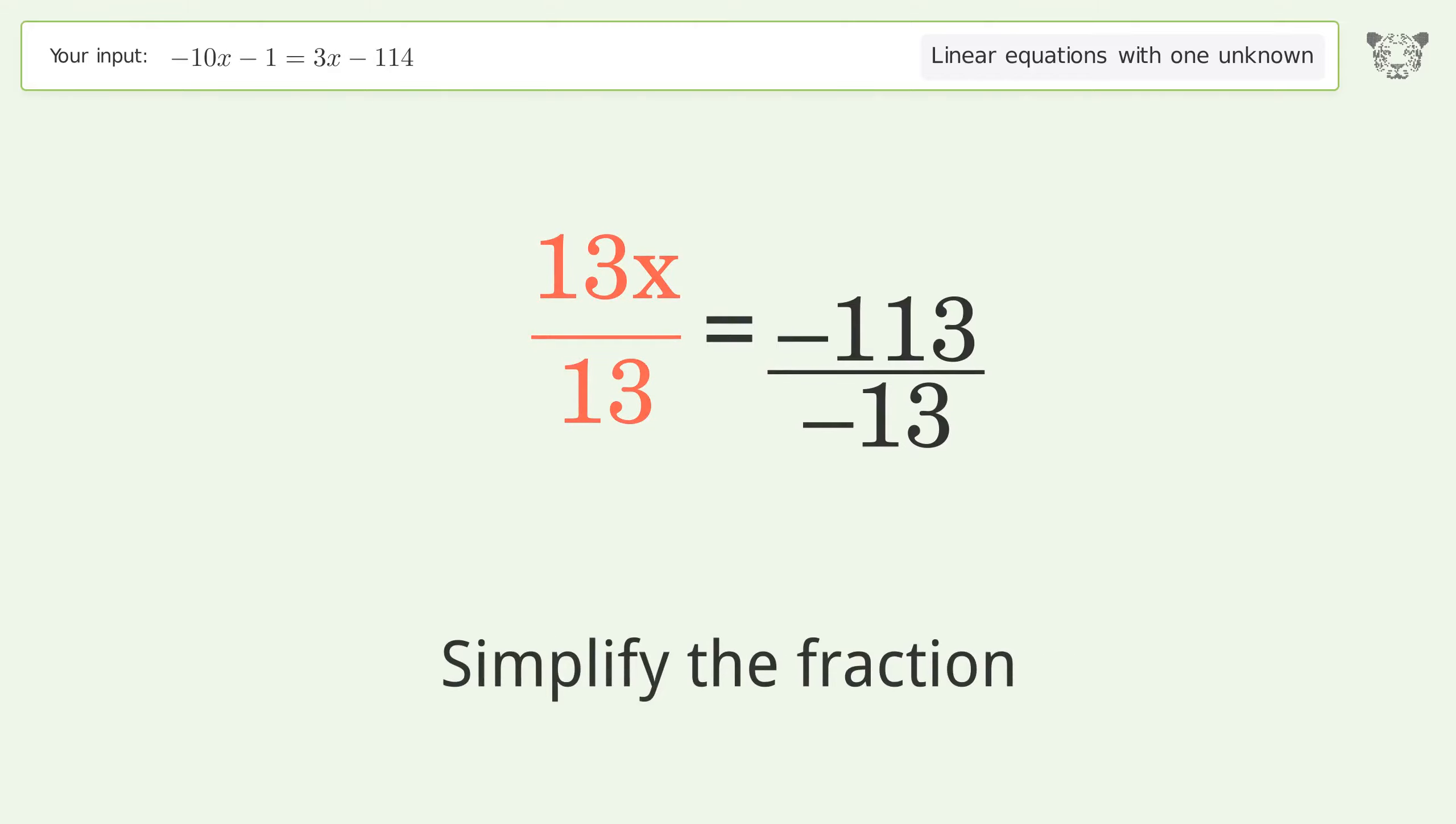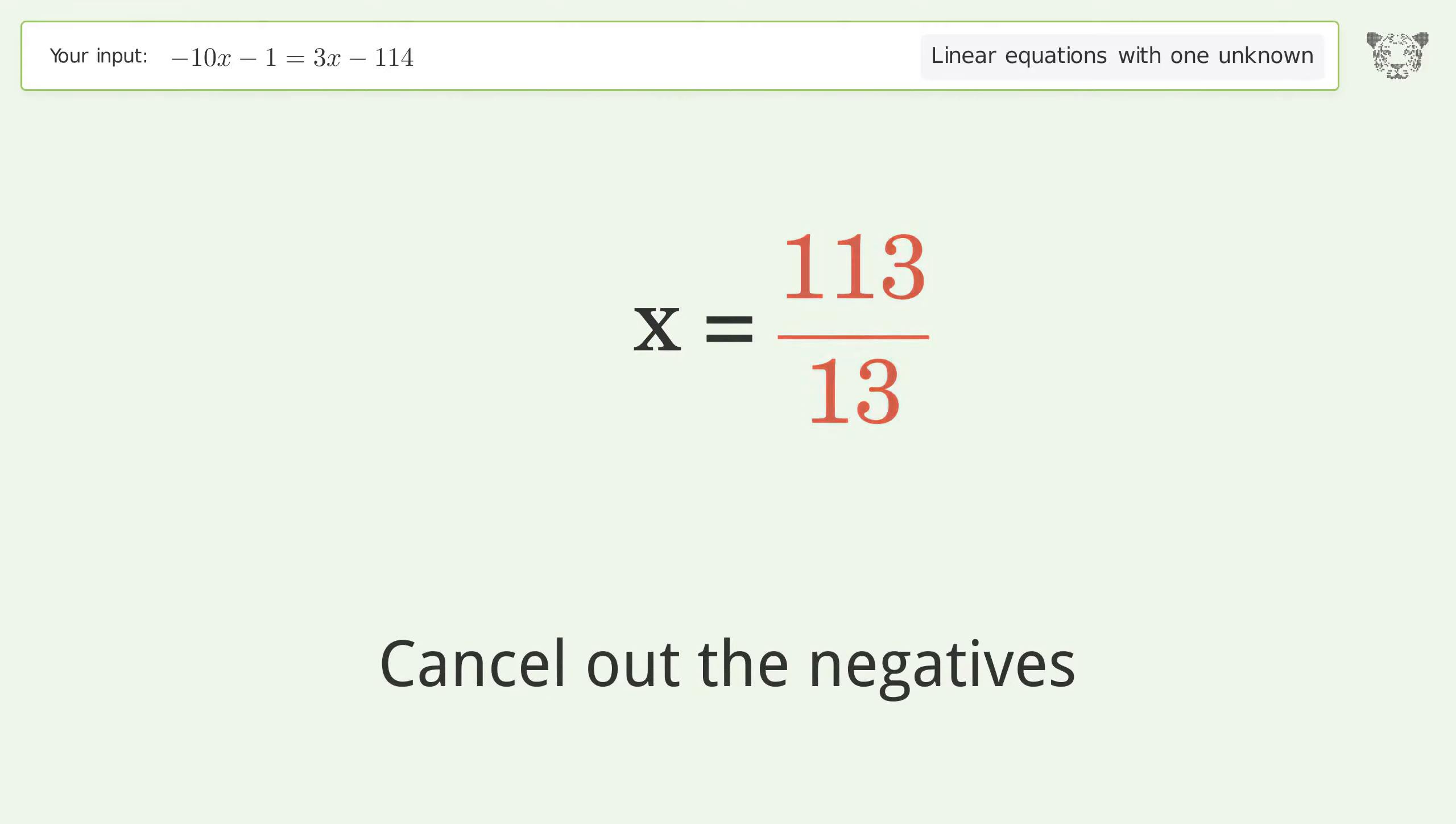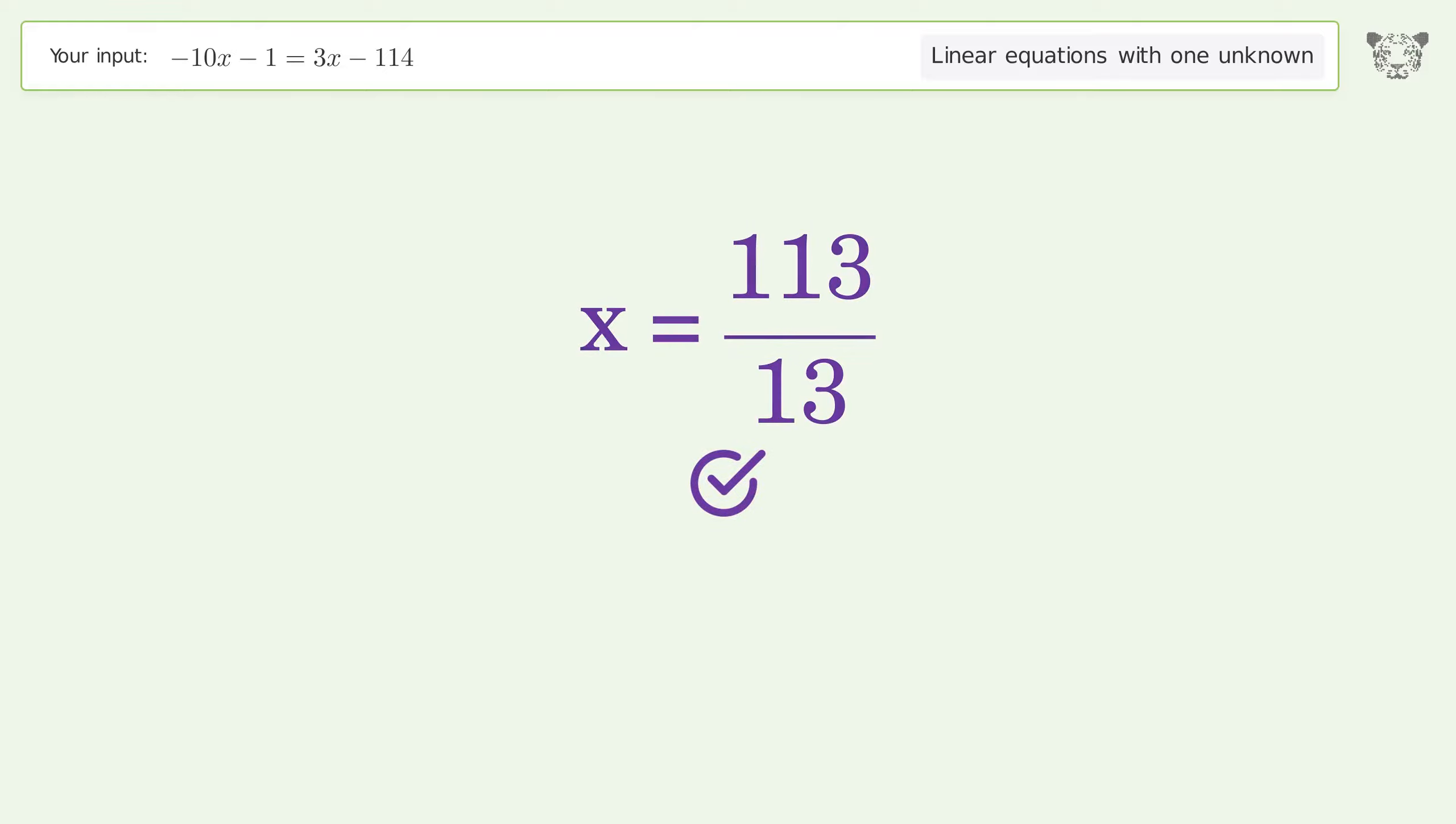Simplify the fraction. Cancel out the negatives. And so the final result is x equals 113 over 13.